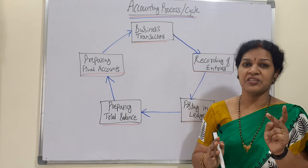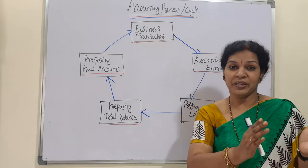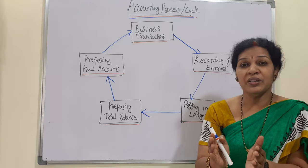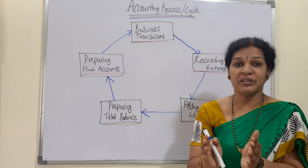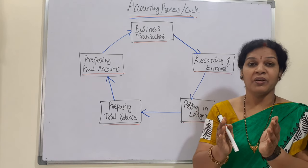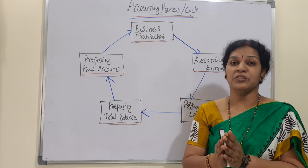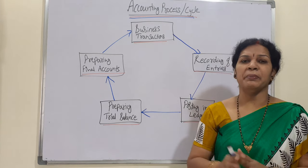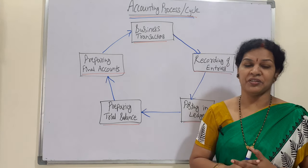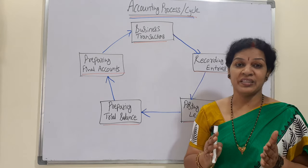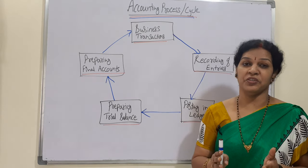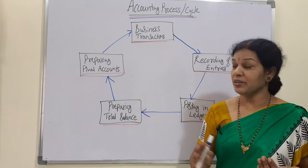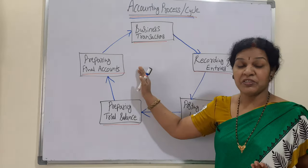The second stage is the profit and loss account, where we record transactions related to the office level — after completion of the manufacturing level, it moves to the office level. In the profit and loss account we get the net profit or net loss. After that, we prepare the balance sheet. With these final accounts we can decide the company's financial position.